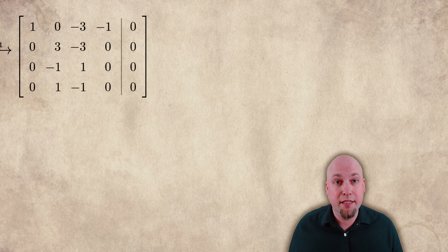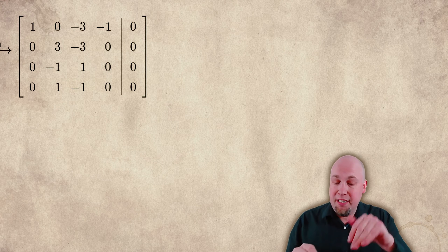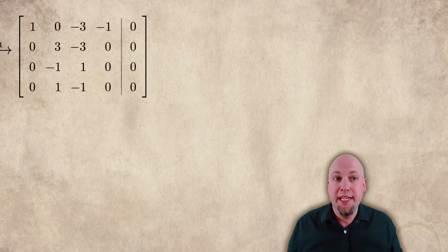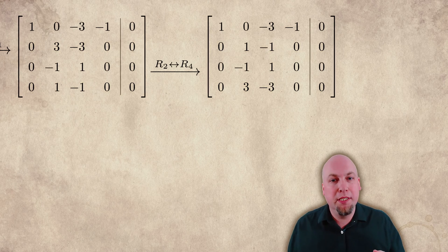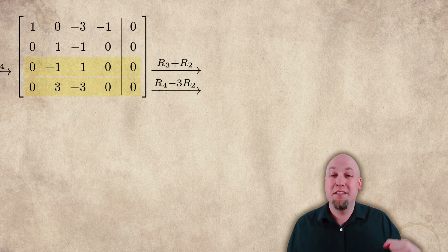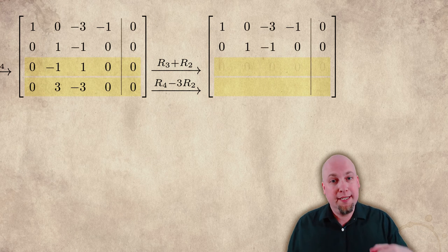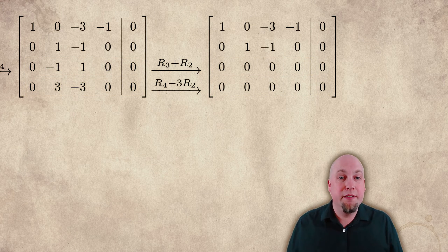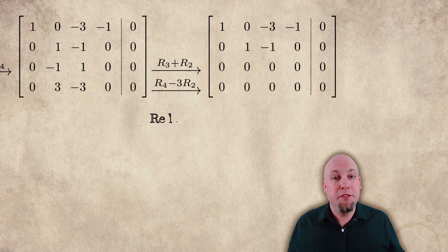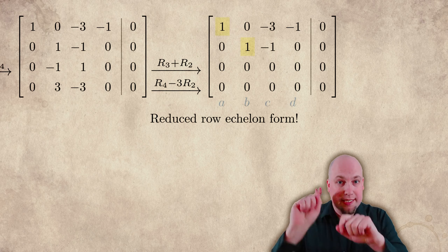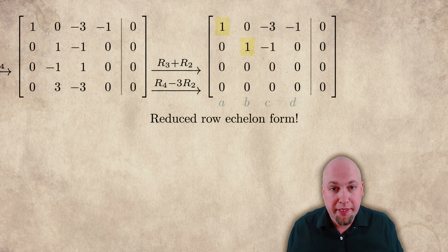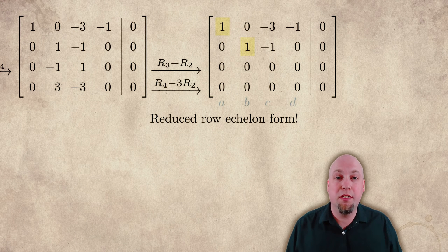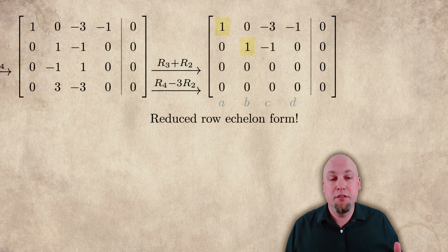Next, let's clean up the second column — it has three leading entries, and I want a leading 1 in the (2,2) position with nothing below it. I'll swap rows two and four to get that leading 1. Then I'll add row two to row three, and subtract triple row two from row four, turning the -1 and 3 below into zeros. At this point, we're in reduced row echelon form: two leading entries in the standard diagonal pattern, all-zero rows tucked at the bottom, and zeros both above and below each leading entry.